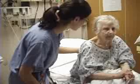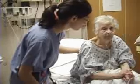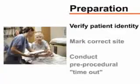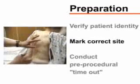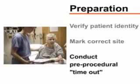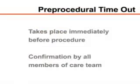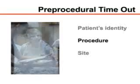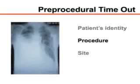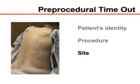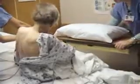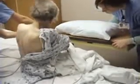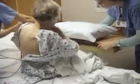Explain the procedure to the patient and obtain written informed consent. You should also verify the patient's identity, mark the correct site, and conduct a pre-procedural timeout. The timeout, which takes place immediately before the procedure is started, consists of confirmation by all members of the care team that the patient's identity, the procedure he or she is to undergo, and the site of the procedure are all correct. You will need an assistant to help position and monitor the patient and assist with the collection of pleural fluid.